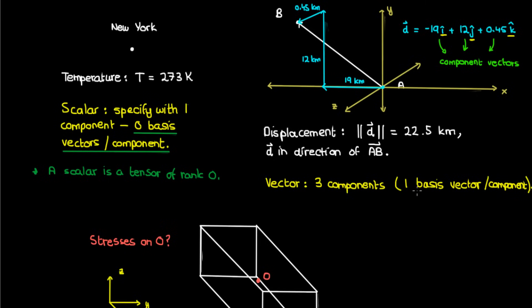What about a vector? Well, for each component of the vector, I showed you that each component is specified by one basis vector, either i, j, or k. Therefore, we can say that a vector is a tensor of rank one.